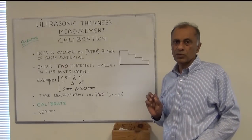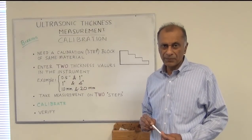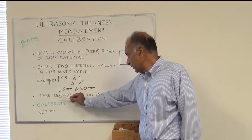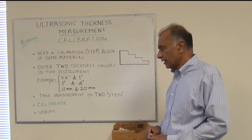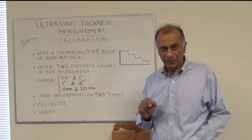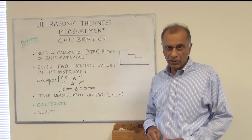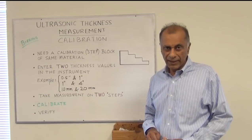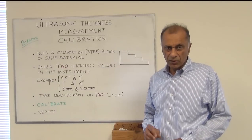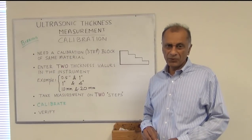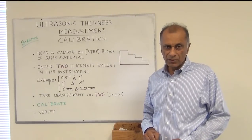We take those two selected numbers and enter them into the machine, and then after that we take the measurements on those two selected steps. Then we calibrate the machine, and by doing that the machine automatically calculates the velocity and the delay on the machine and the machine is calibrated. Once the machine is calibrated, in order to be sure that the calibration is correct we have to verify the calibration back on the step block with known thickness steps.